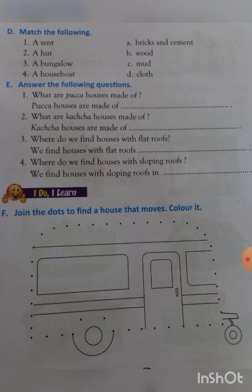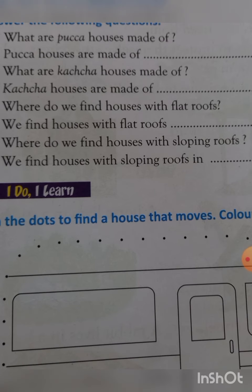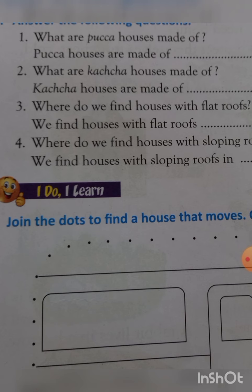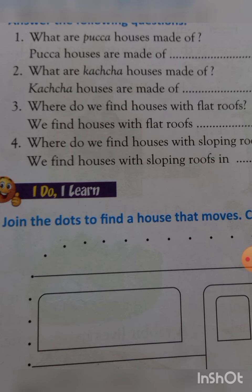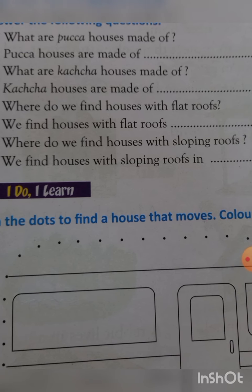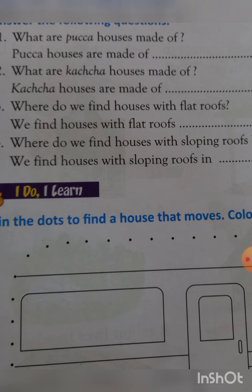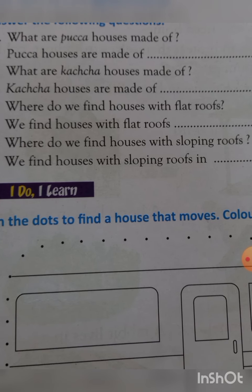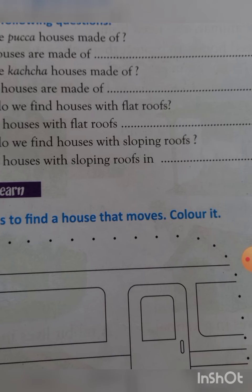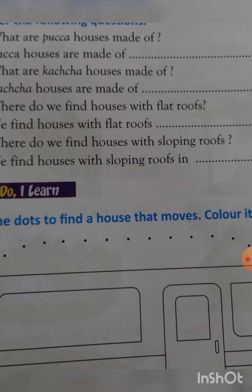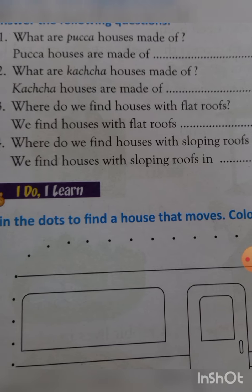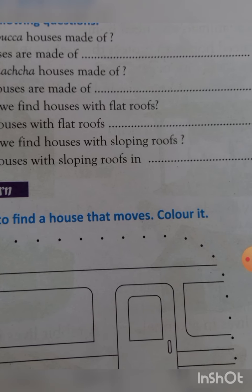Answer the following questions. What are pakka houses made of? Pakka houses are made of bricks and cement. What are kaccha houses made of? Kaccha houses are made of mud and bamboo. Where do we find houses with flat roofs? We find houses with flat roofs in plains. Where do we find houses with sloping roofs? We find houses with sloping roofs in hills.